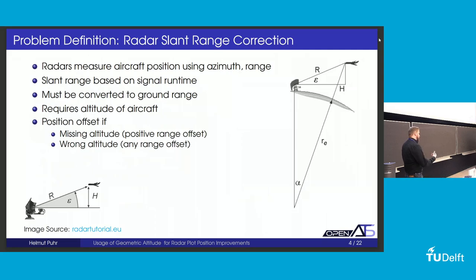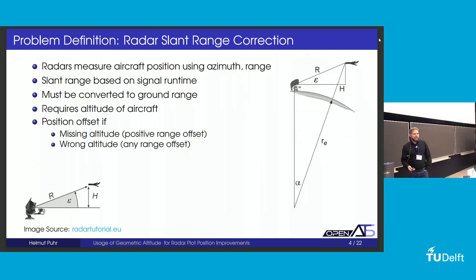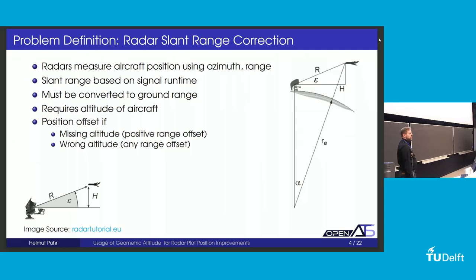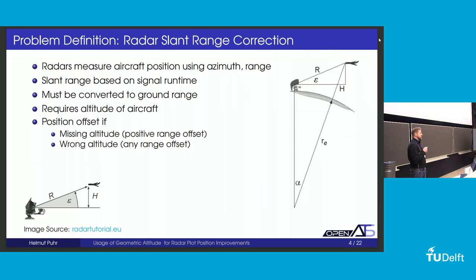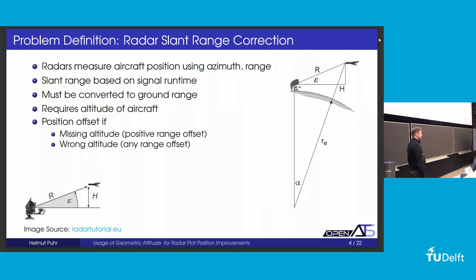To discuss the problem definition, we have to talk about radars because we're focusing on improving radar plot accuracy. Radars measure aircraft position using azimuth and range. The range is based on signal runtime, so we have not a ground range but a slant range coming from the radar. To convert this into a ground range — the horizontal line rather than the diagonal — we need the altitude of the aircraft.